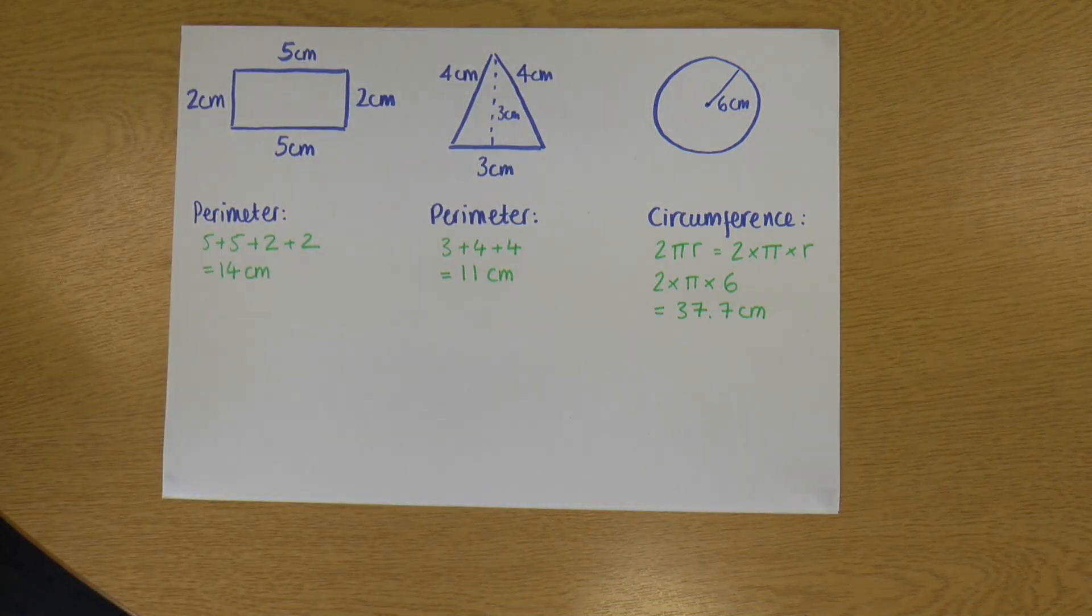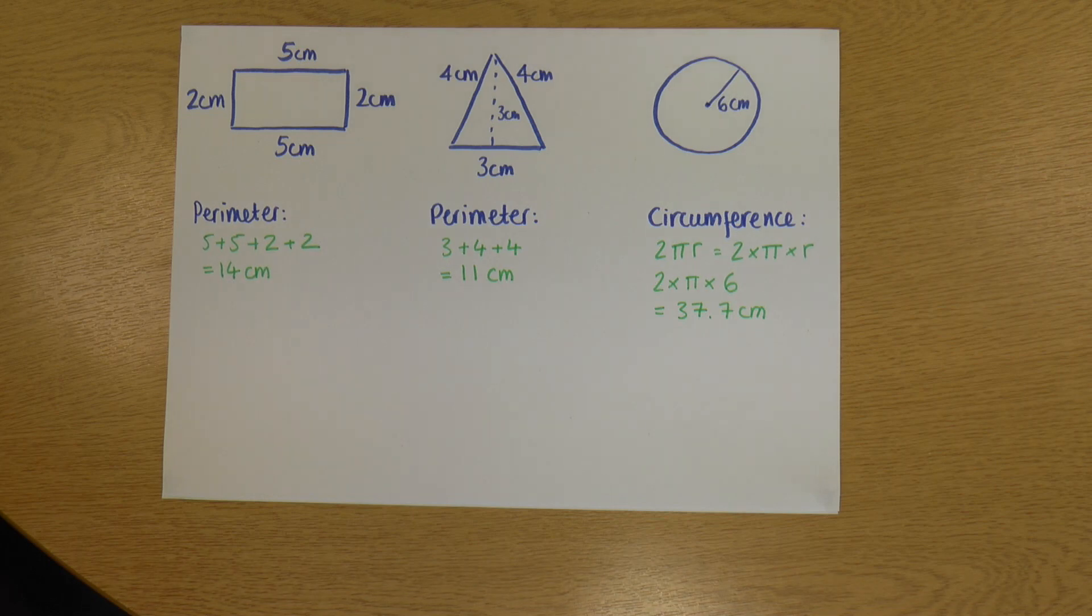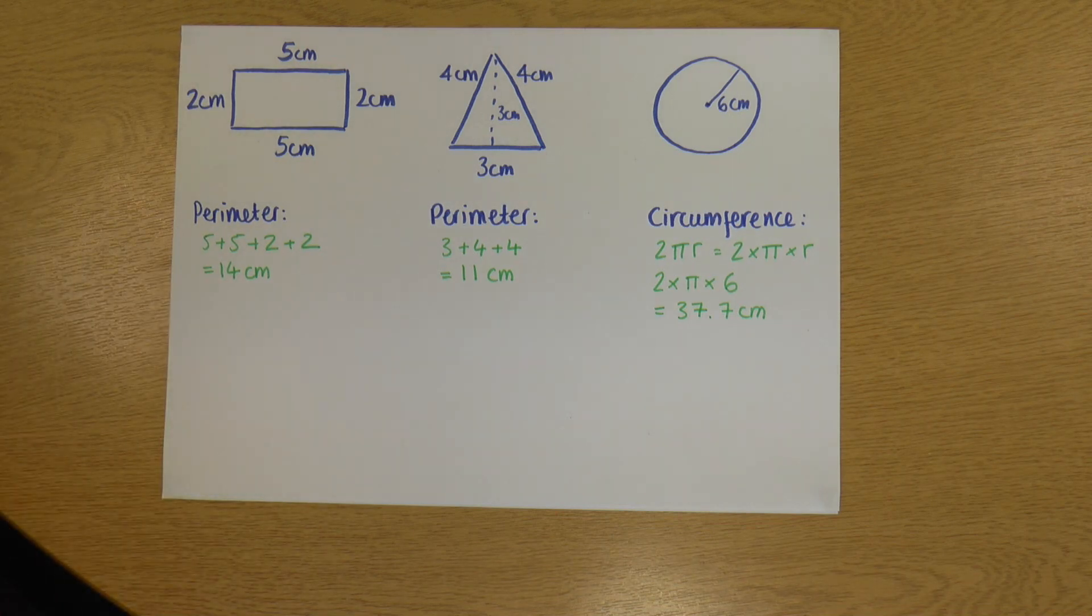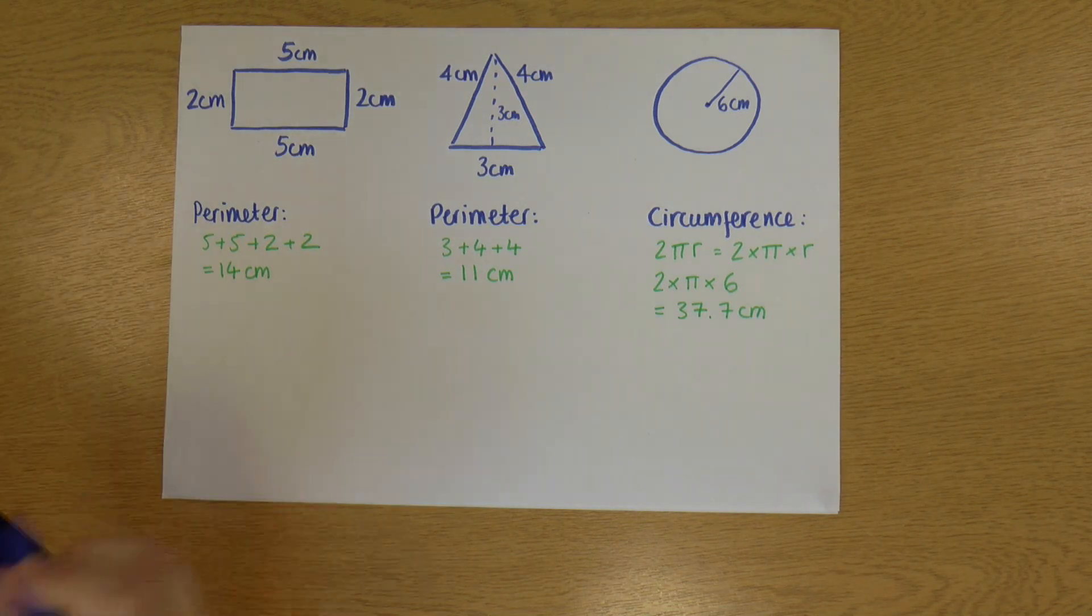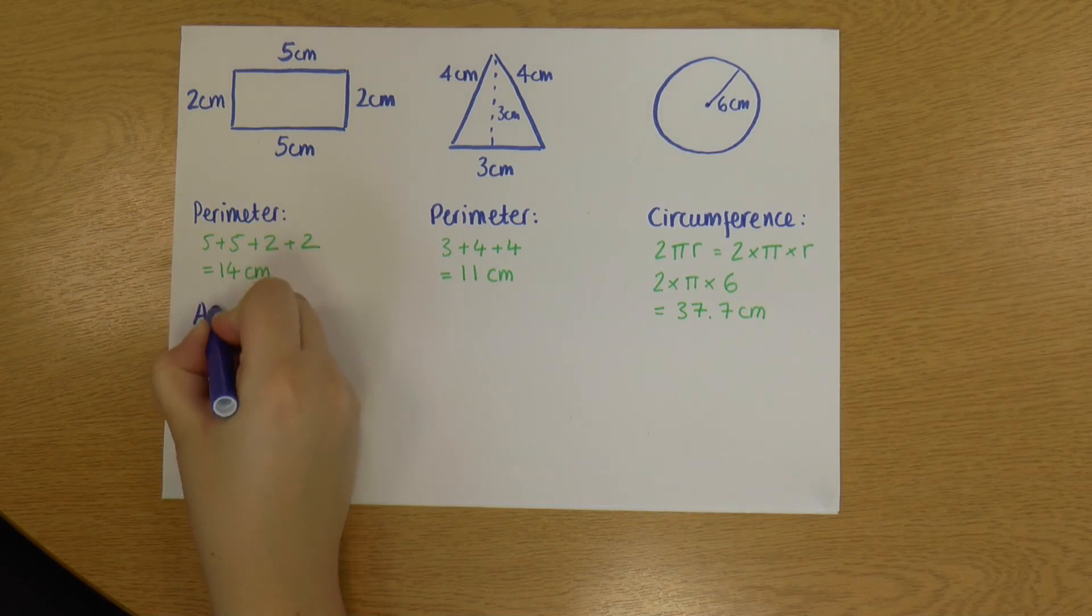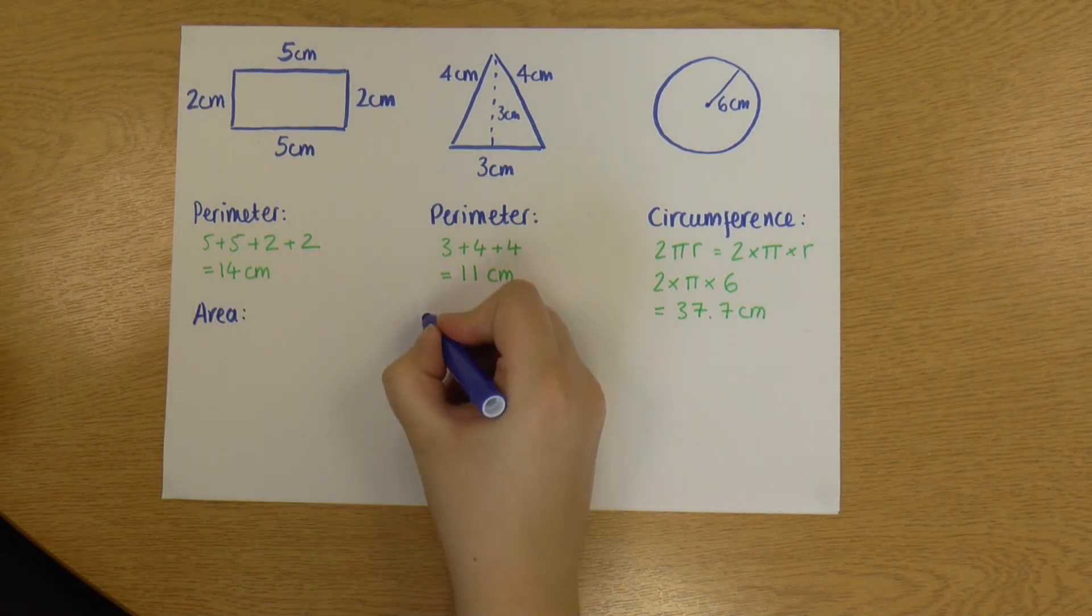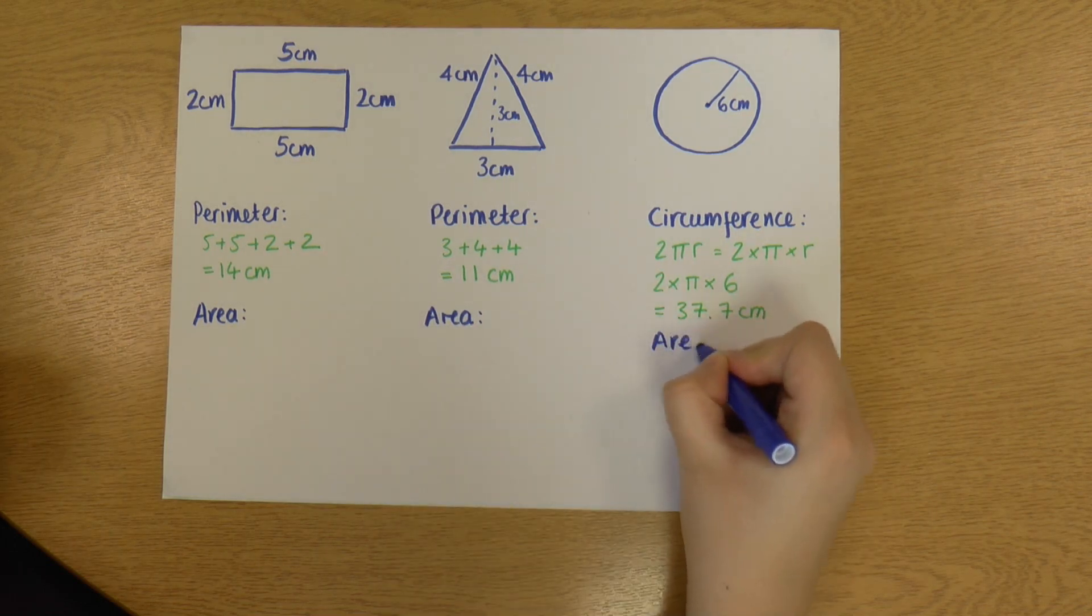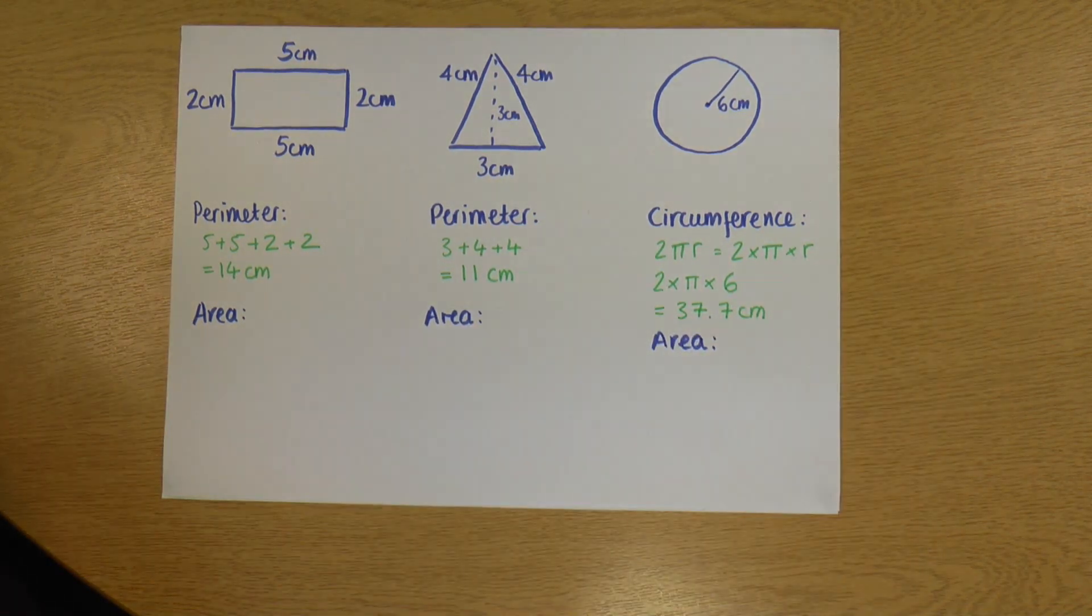Great. So that's perimeter and circumference of shapes for all shapes. Just add up the lengths of the sides. The only one that's different is this circle. Let's move on to our area. So I'm just going to write area down here. And we can find an area for all of these as well.